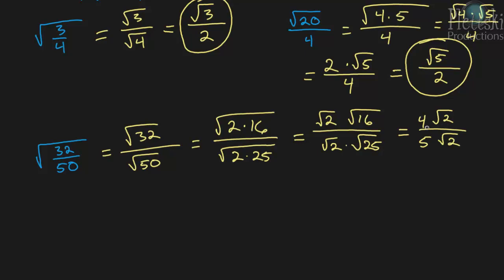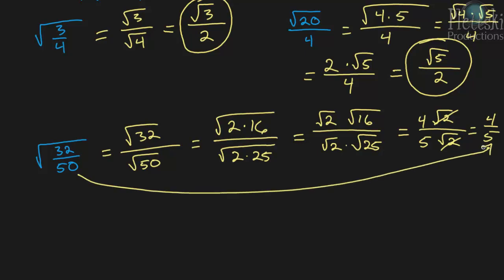It's okay to put the 4 out front because with multiplication, it doesn't matter which order you multiply things in. The only thing I can do at this point is cancel out the square root of 2s, because we have one in the numerator and one in the denominator — so those cancel out. And we're just left with 4 over 5. So the square root of 32 over 50 simplifies to 4/5. And you should be getting a better idea of working with radicals and simplifying using the product property and the quotient property.